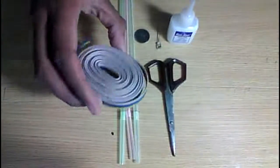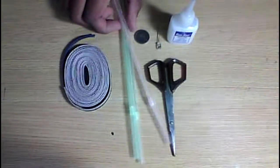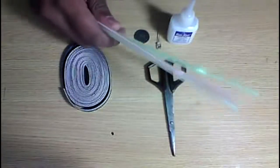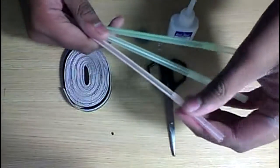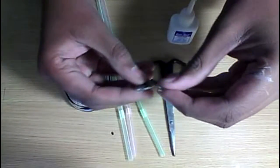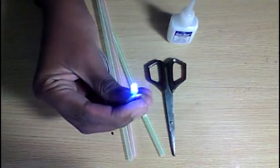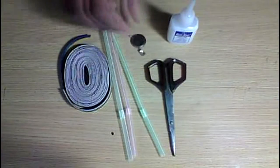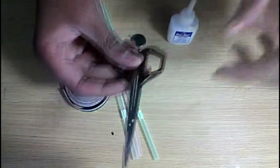So the materials required for this build are some wires, some straws, a coin cell, and a LED of any color. A pair of scissors and some super glue.